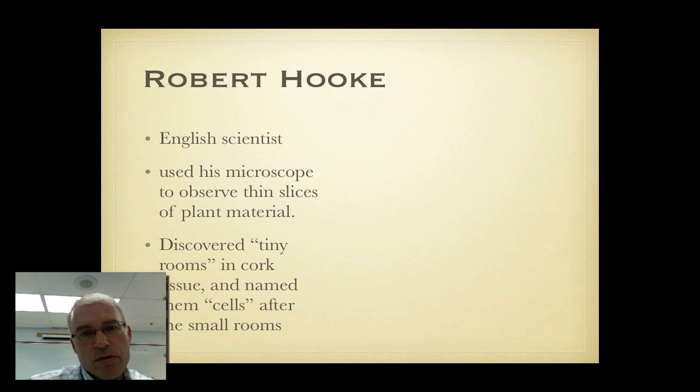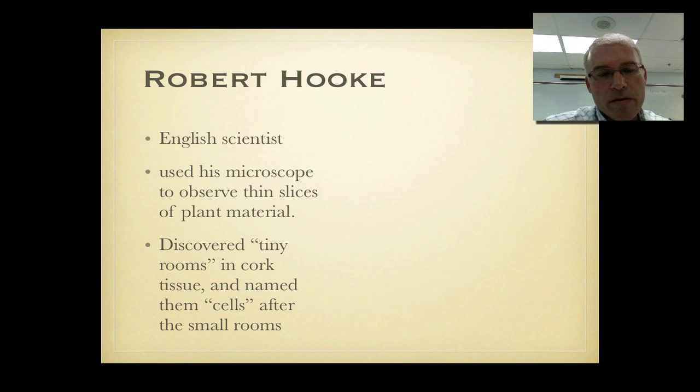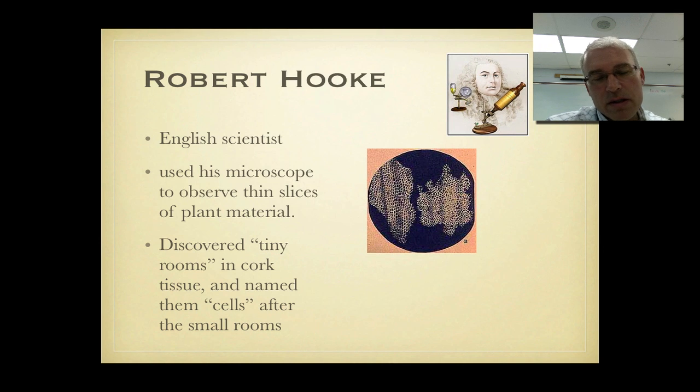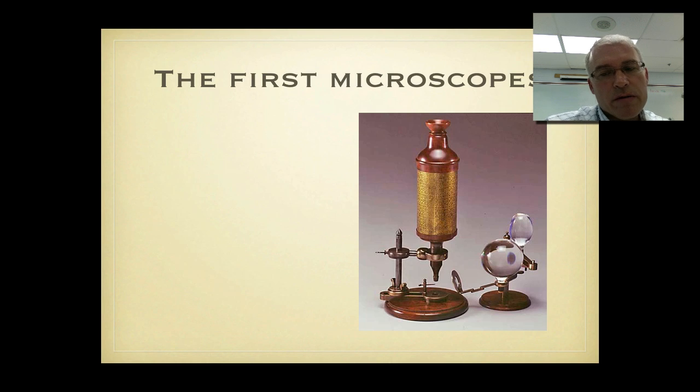The other scientist was Robert Hooke and he was from England and he used his microscope to observe very thin slices of plant material and he discovered that plant material is made up of all these little tiny rooms and he nicknamed them cells after the small rooms that monks live in. Robert Hooke's microscope was a much larger affair and it looked a lot more like a telescope. He's credited with using the word cell to describe the smallest unit of life. He was the first person to do that so that kind of makes him important.